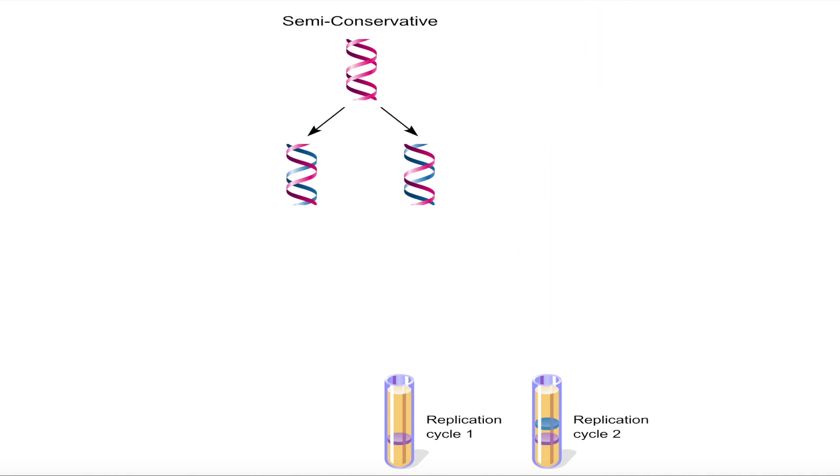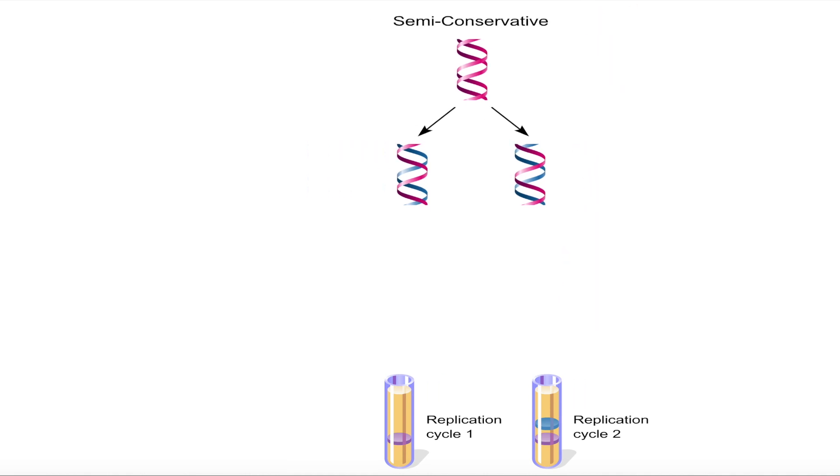The semi-conservative model predicted that the second replication would produce four molecules, two of which contained two light strands, two of which contained one heavy and one light strand. This would result in two bands in the gradient, one of intermediate density and one of light density. This prediction matched the experimental results, providing compelling evidence that the semi-conservative model was the correct model of DNA replication.